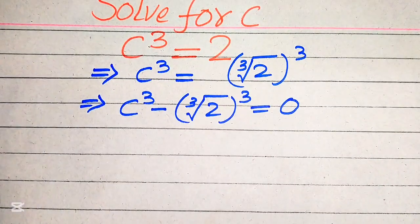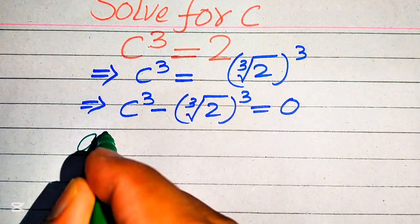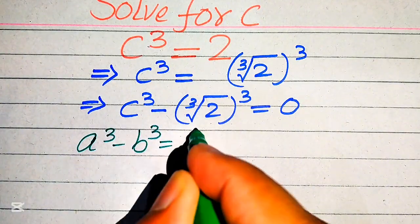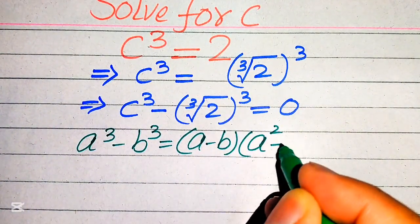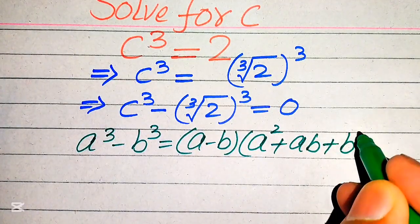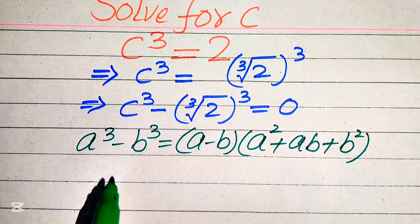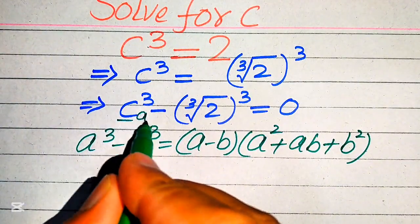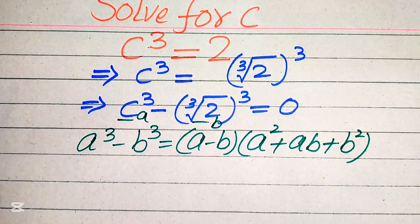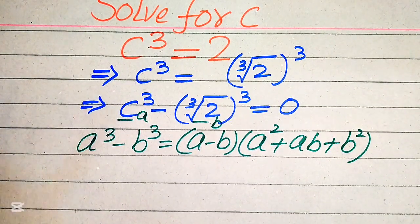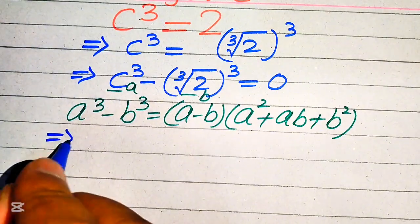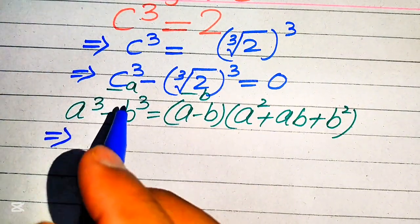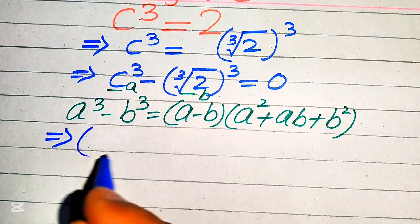Now we apply the cubic factoring formula: a cubed minus b cubed equals (a minus b) times (a squared plus ab plus b squared). You can see that the base of the first term is our a, and the base of the second term is our b, so we put the values of a and b into this formula.